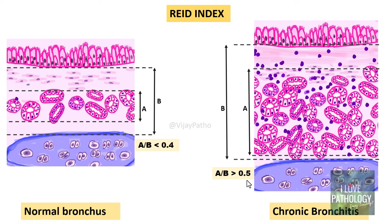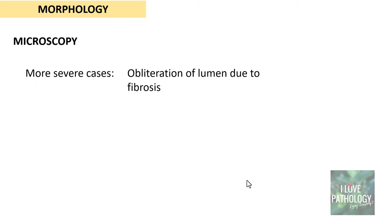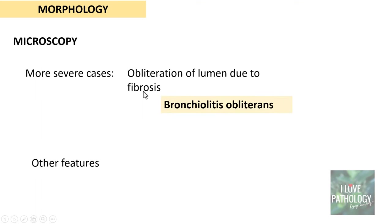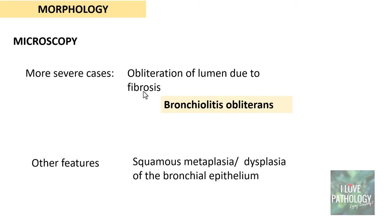The Reid index does not have diagnostic value in vivo — it is often an autopsy finding, helpful when looking at histological sections from an autopsy lung to determine whether it is chronic bronchitis. Other morphological features include obliteration of the lumen due to fibrosis, called bronchiolitis obliterans, as well as squamous metaplasia or dysplasia of the bronchial epithelium, mainly because of the irritant effect of tobacco smoke.